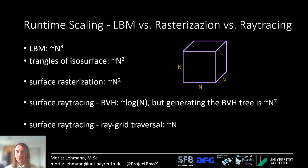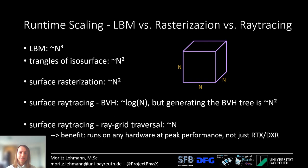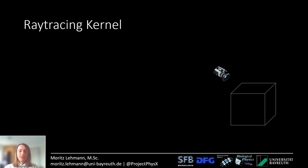However, scaling doesn't tell you everything, because there's also a constant — and the constant is quite large for ray tracing — so rendering performance for ray tracing is typically a bit lower than for rasterization. Another benefit of ray grid traversal is that it runs on any hardware at peak performance, not just the RTX and DXR GPUs. I can totally run this on Intel integrated graphics from 5 years ago and it still runs interactively in real time.